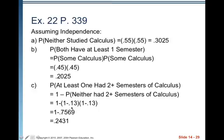So this 0.7569 right here, this is the probability that neither had two or more semesters of calculus. So the probability that at least one had two or more semesters of calculus would be one minus this value. And so you get 0.2431.